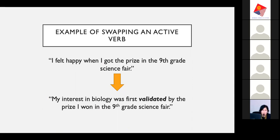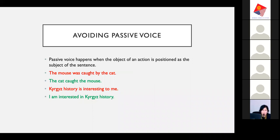Here's an example of swapping an active verb. Compare: 'I felt happy when I got the prize in the ninth grade science fair' versus 'My interest in biology was first validated by the prize I won in the ninth grade science fair.' This is an opportunity to use a stronger verb and also tell a continuous story. Maybe someone writing this application is now applying for a graduate degree in microbiology because they were first inspired in the ninth grade. These kinds of verbs can be really powerful.